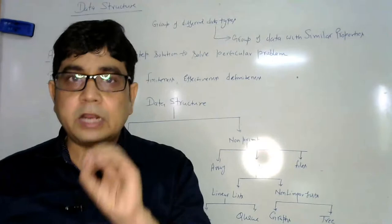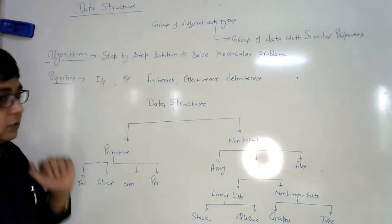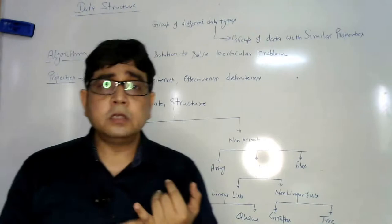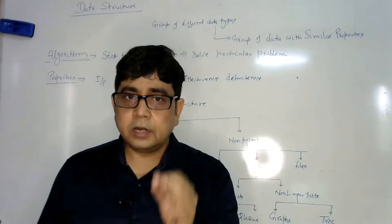Algorithm has some basic properties. The properties are there must be some input. Every algorithm must have some input and some output. If there is an input, then it will be processed and it will produce an output.